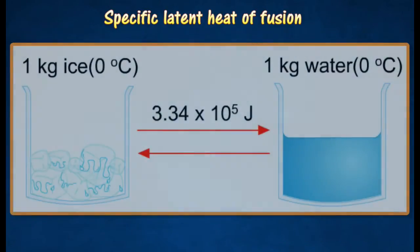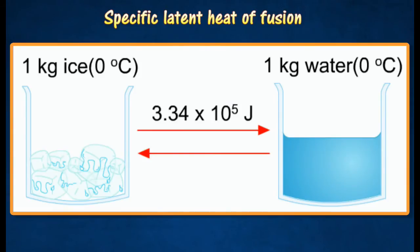Given here, 3.34 times 10 to the power of 5 joules of heat needs to be removed to freeze 1 kg of water to ice at a constant temperature of 0 degrees Celsius.